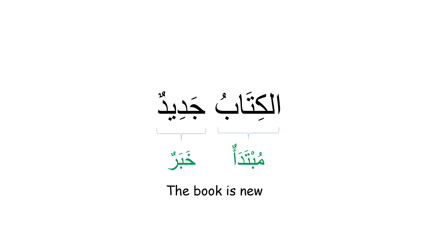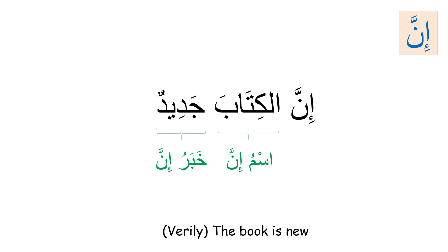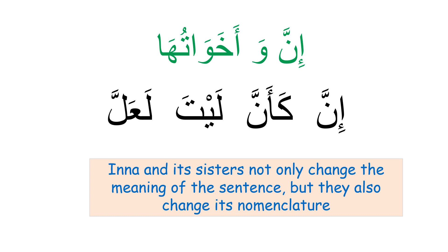Now the terminology section. If inna is used at the beginning of a nominal sentence, the subject is no longer called mubtada — instead it is called ism inna, and al-khabar changes to khabar inna. The same goes for the other sisters: for la'alla it is ism la'alla and khabar la'alla; for layta, ism layta and khabar layta. The sisters not only change the meaning and declension but also the nomenclature of the sentence.